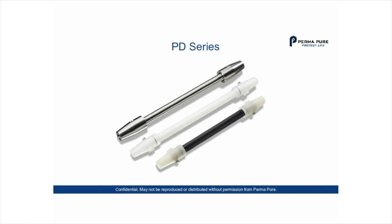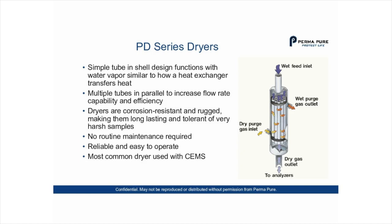Let's go to the PD dryer series. There's an image of different PD dryers in different materials. The basic design is similar to our MD dryer — MD means monotube and PD means polytube dryer. The dryer is a simple tube-and-shell design that functions with water vapor similarly to how a heat exchanger transfers heat. The wet gas enters the dryer through the top and exits at the bottom dry, and there is a counter-flowing purge gas stream that enters at the bottom and exits at the top wet.